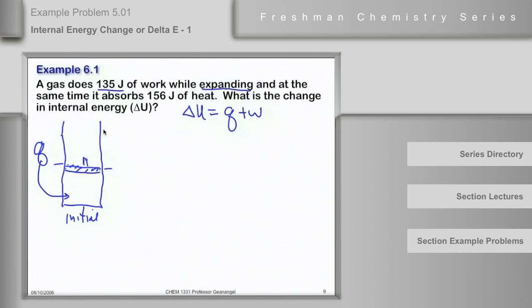So, if it goes into the system, Q is equal to what number with what sign? Q is the heat change. So, the number has to be 156. What's the sign? Positive.